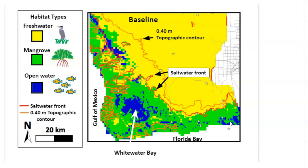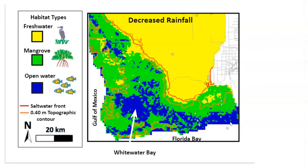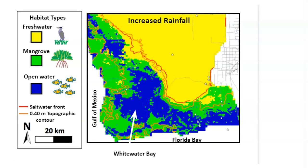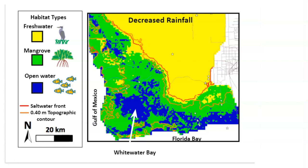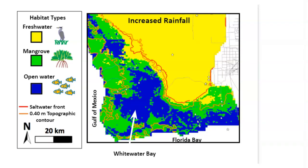In the scenario with increased warming and decreased rainfall, the mangroves expand inland by up to 15 kilometers, hugging that saltwater front, and there is some drowning of mangroves along Florida Bay and Whitewater Bay. In the scenario with increased warming and increased rainfall, the mangroves pushed inland to an almost identical degree.